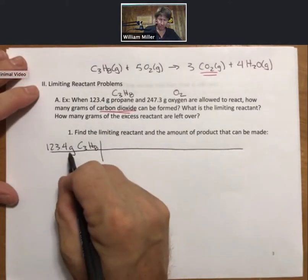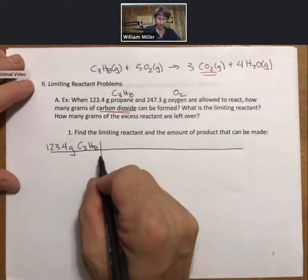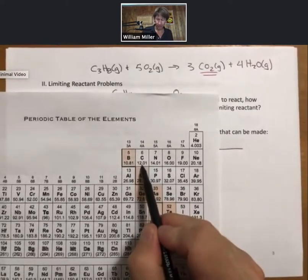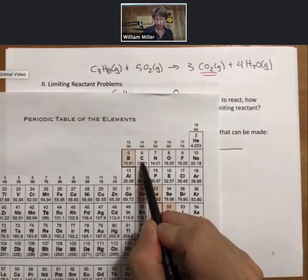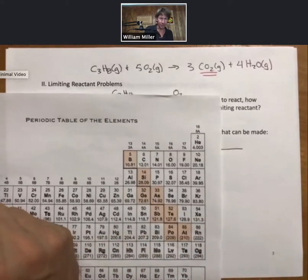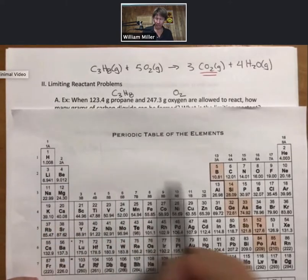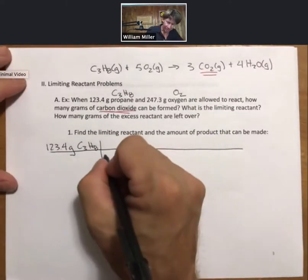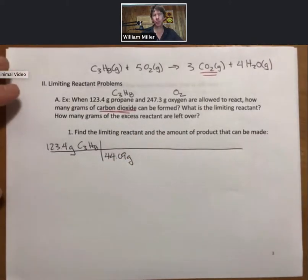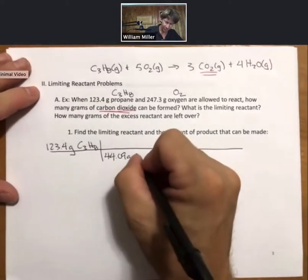And again, this is very typical stoichiometry. We're going to take grams, turn them into moles. For propane, we know that there are three moles of carbon, 12.01, plus eight moles of hydrogen. We add that up to get the molar mass. Molar mass for propane is 44.09 grams of propane per mole.